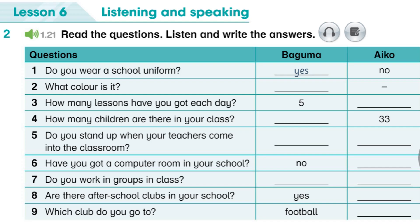Unit 2, Lesson 6, Activity 2. Hello, my name is Baguma. I go to primary school in Uganda. I wear a uniform — it's blue. We've got five lessons every day. There are 32 children in my class. We always stand up when a teacher comes into the classroom and we say, "Good morning, sir" or "Good morning, madam."